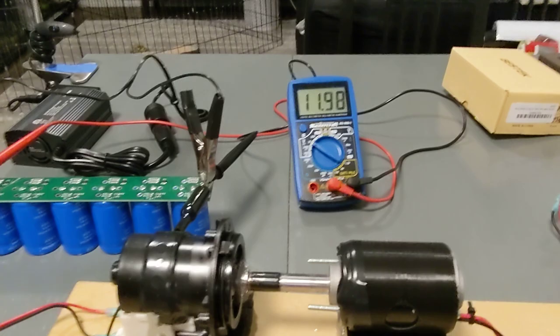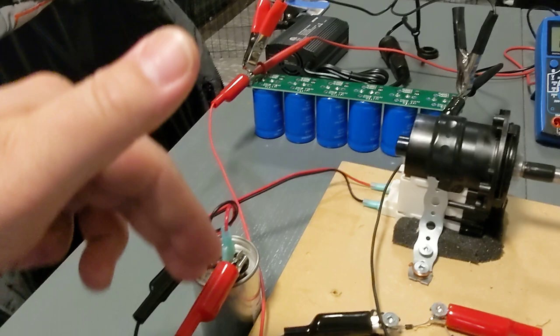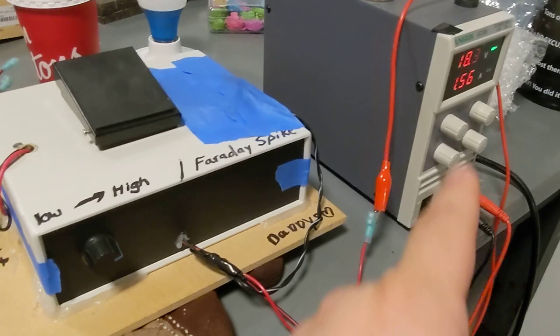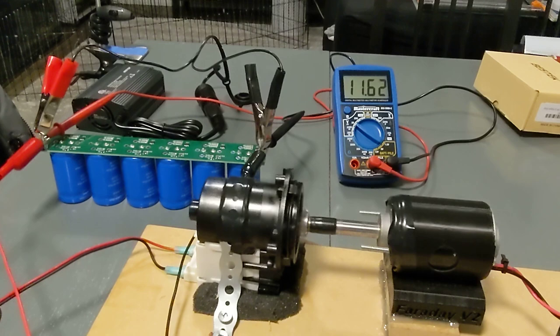I figure if I get the charge controller hooked up from the bridge rectifier, and then from there goes to the battery, and then the battery will run the inverter. Then I can run the load and then I would get the power cord for my power supply, hook it up to the inverter. So I'll be completely looped.